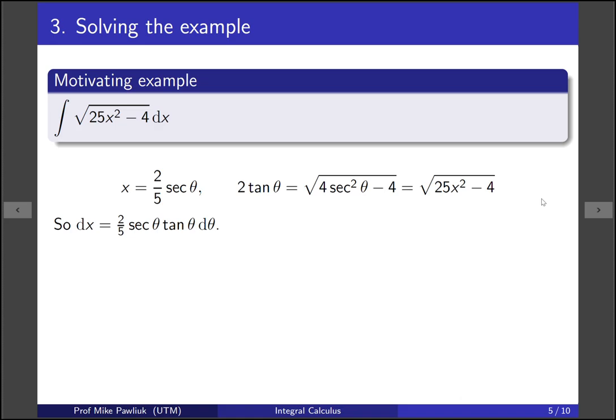Now in order to do a trig substitution, we actually have to find the derivative of x. So we do that. Derivative of secant is secant tan. So now we're ready to make all the substitutions.